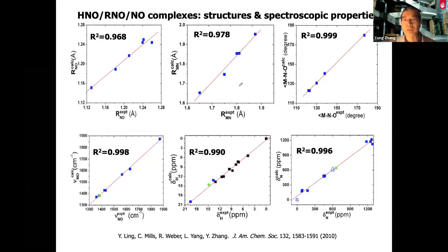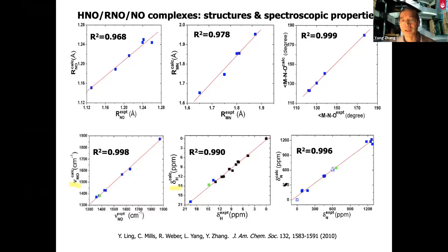Again, it's not purely computational because otherwise there are too many approximations and you cannot give a good prediction. So we combine quantum mechanics with experimental spectral properties. For example, we use small molecules to calibrate our methods — calculating NO vibrational frequency, proton amide chemical shift, iron amide chemical shift, nitrogen amide chemical shift — because they involve these kinds of atoms. These are all atomic-level response spectroscopic properties, which give more useful information.